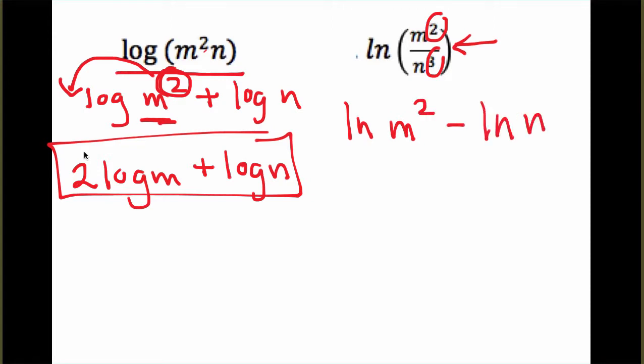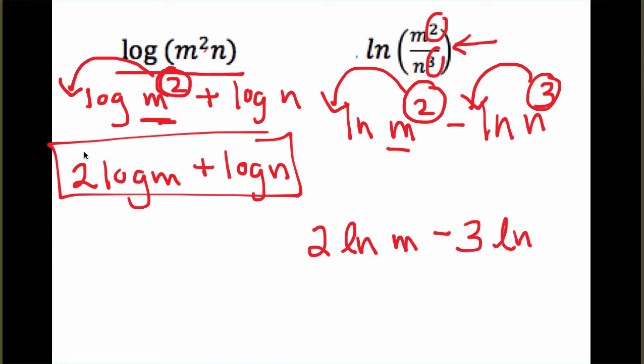And notice I'm keeping the same base, so the natural log for each of these. And then after it's separated, now the full m is to the second power. So I can put that in front of that expression and the 3 in front of that expression. And so that gives me 2 natural log of m minus 3 times the natural log of n.